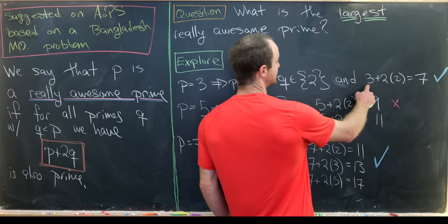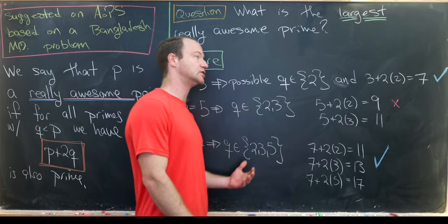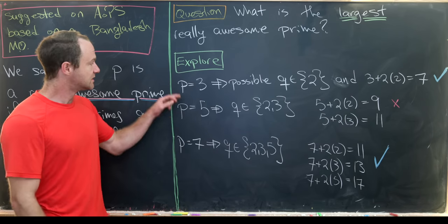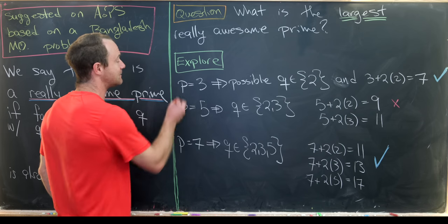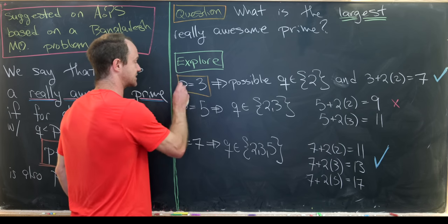And then we get p plus 2q, which is 3 plus 2 times 2, which is 7. That's prime. So that means that p equals 3 is a really awesome prime.